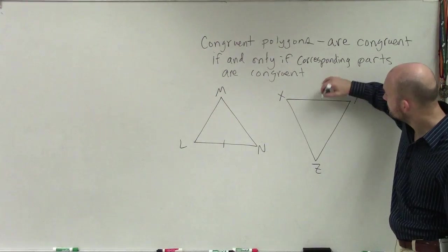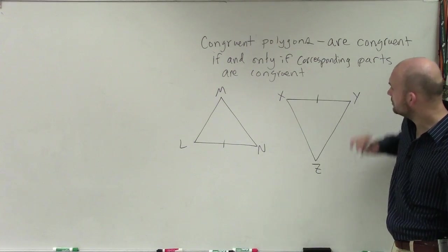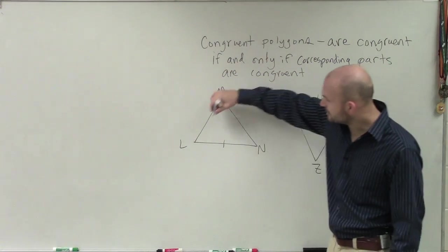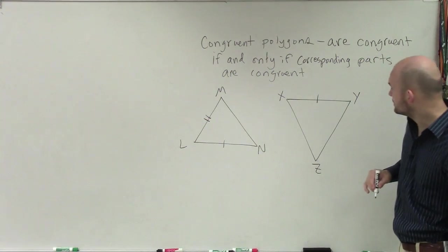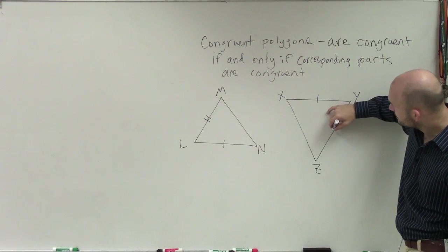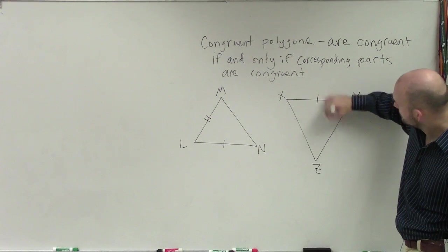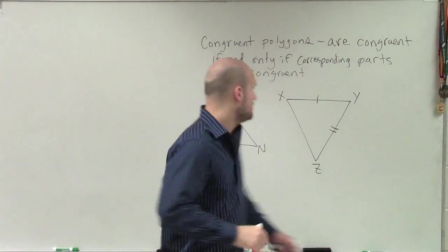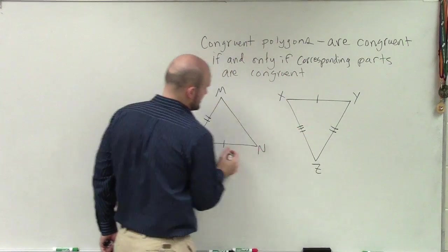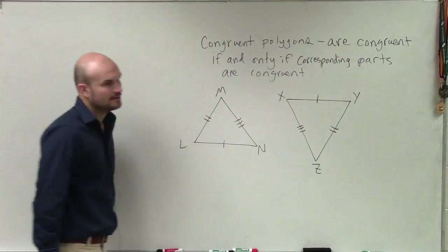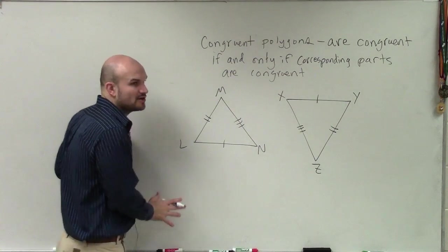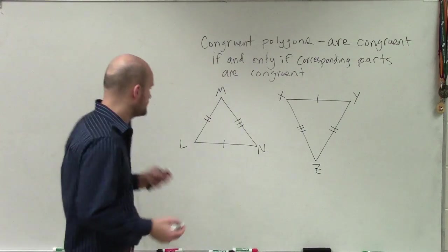So I can say that LM equals XY. I could say that this point LM is going to equal YZ. We'll do it that way. Then we could say these three sides. Now let's go through the angles for these corresponding parts.